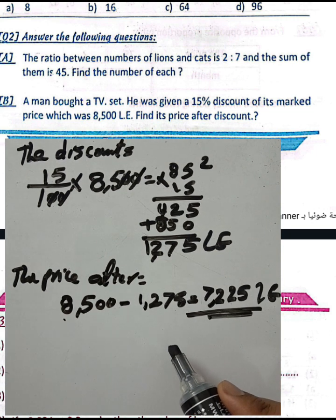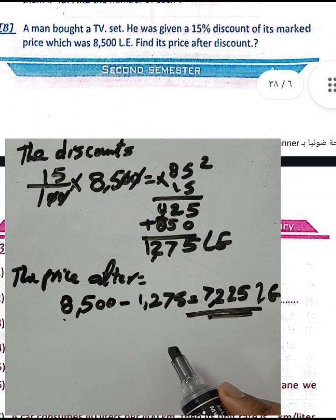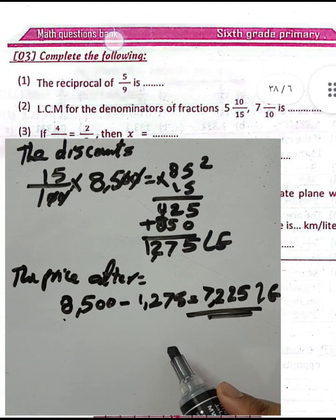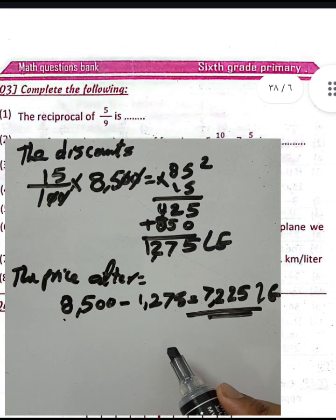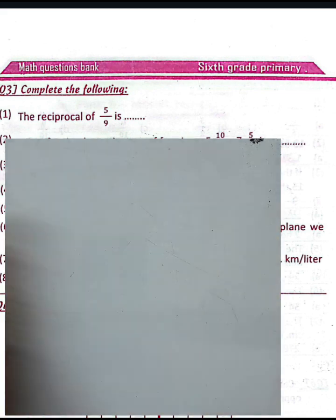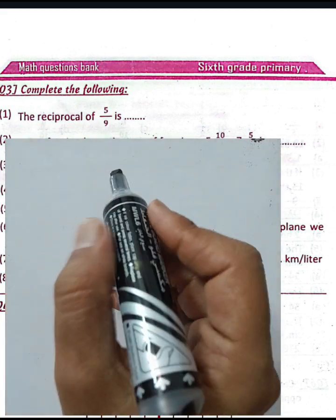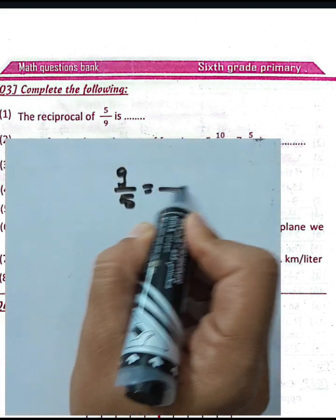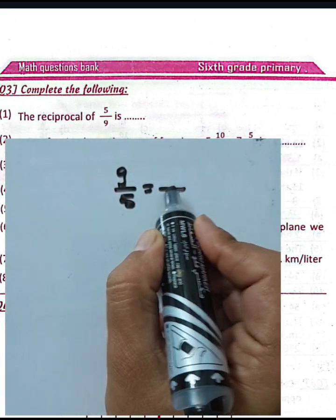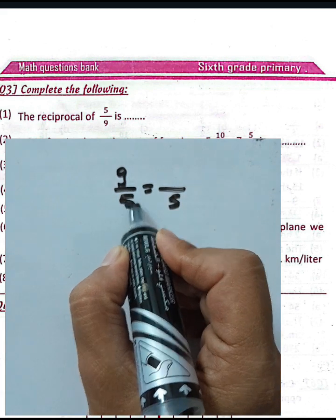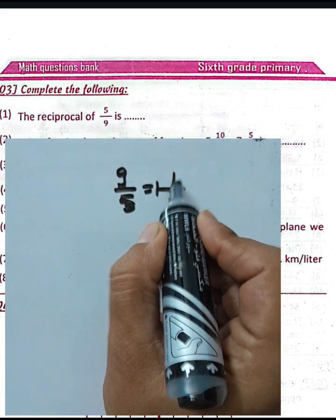Question number three: the reciprocal of 5 over 9 is 9 over 5. Then 9 divided by 5 equals 1 with remainder 4, so it is one and four-fifths.